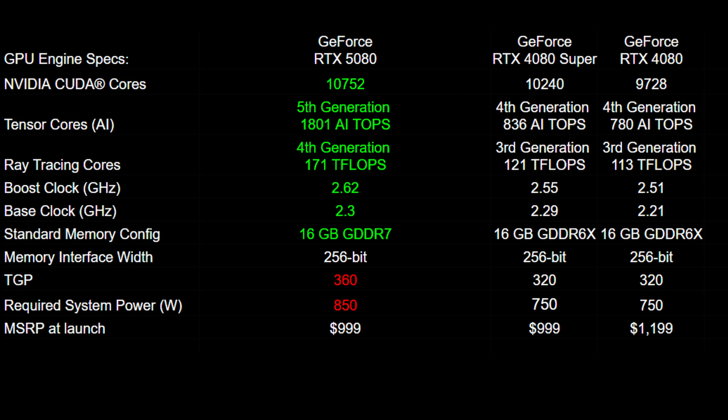Quickly factoring in the 4080 Super, not much changes in terms of the benefits for the 5080 except for that MSRP — instead of a price decrease it is now the exact same $1,000. Pretty much everything that was a benefit over the 4080 is still a benefit over the 4080 Super, though not quite as much since the 4080 Super has more tensor cores, ray tracing cores, and CUDA cores.